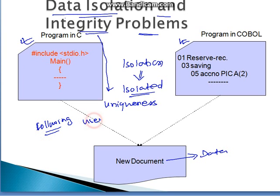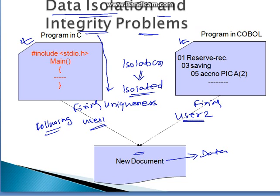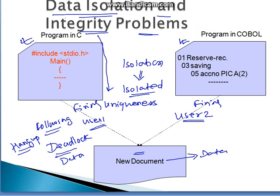If both programmers are following the same query — user number one with the C program and user number two with the COBOL program — both firing or fetching the same data from the same document, then a deadlock can occur. The system can hang up. This was the problem in the file processing system: integrity and isolation problems.